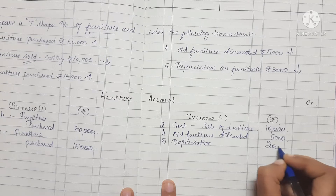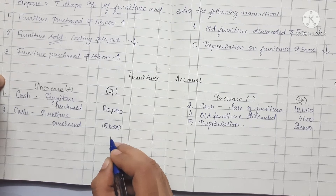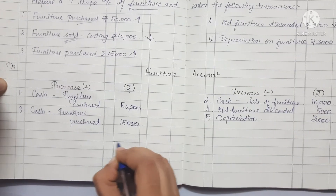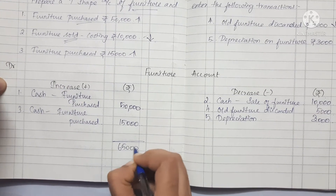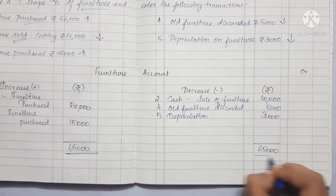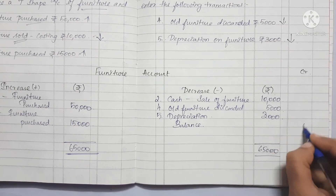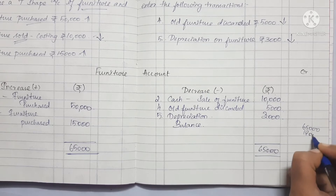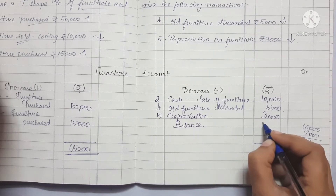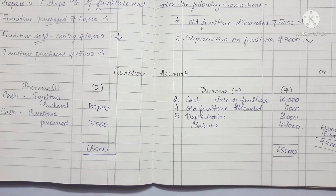Now we have totaled the account. The Debit side totals Rs. 65,000 and the Credit side totals Rs. 18,000. So the balance of the furniture account is Rs. 47,000. This is the closing balance of the T-account.